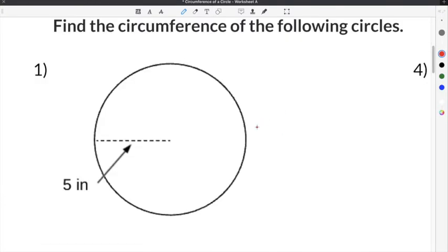The first problem on our circumference of a circle worksheet gives us 5 inches for the radius. I know this is the radius because it's from the center point of the circle out to an outer edge. So the formula that we're going to use is circumference equals 2π times the radius.